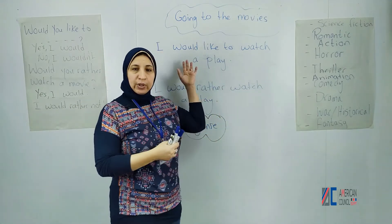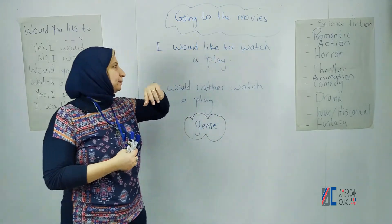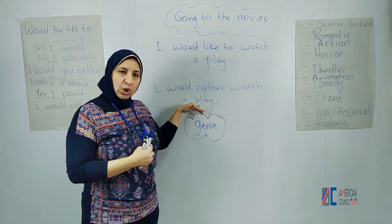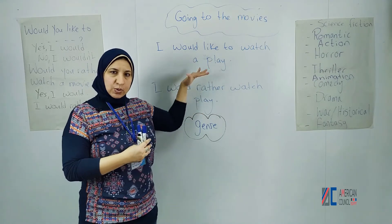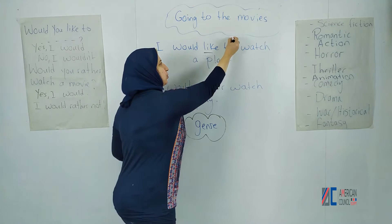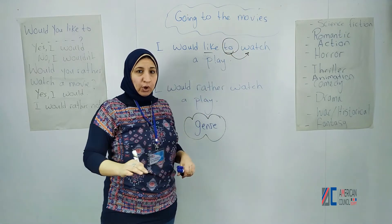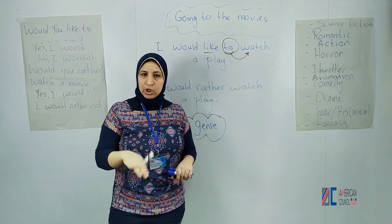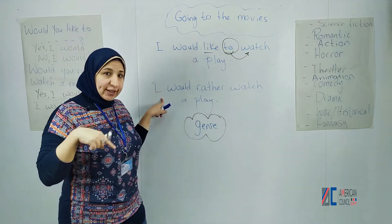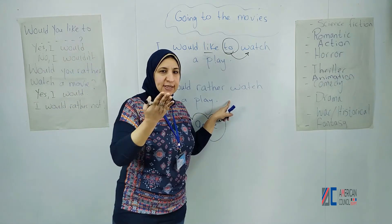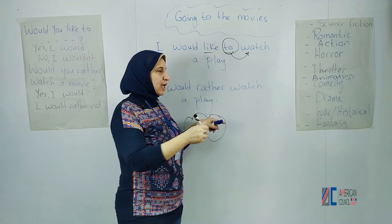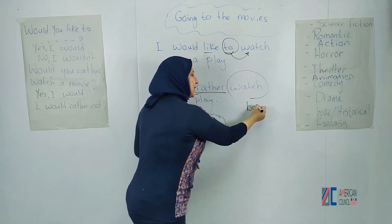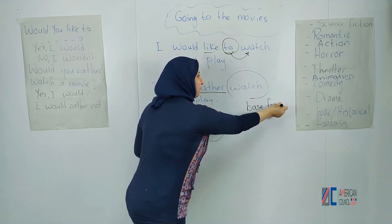If you look at the affirmative statements: 'I would like to watch a play' or 'I would rather watch a play' — what is the difference between these two sentences? With 'I would like to,' we have 'to' followed by the base form of the verb — the verb without any addition or change. With 'I would rather watch a play,' there is no 'to,' but we still use the base form of the verb.